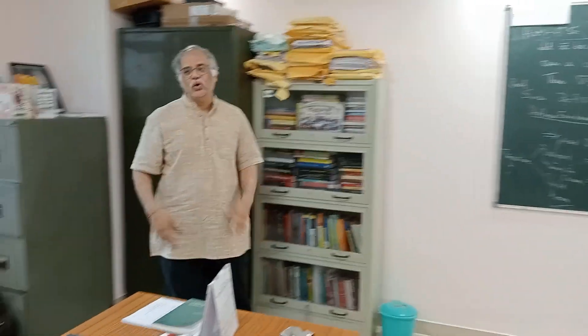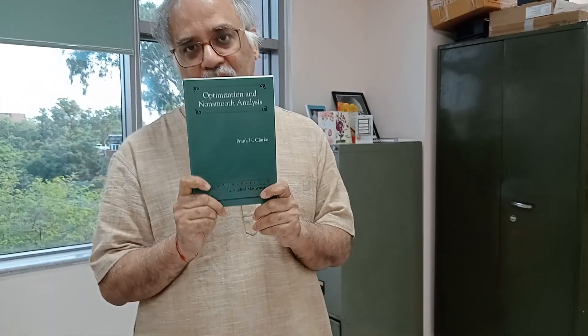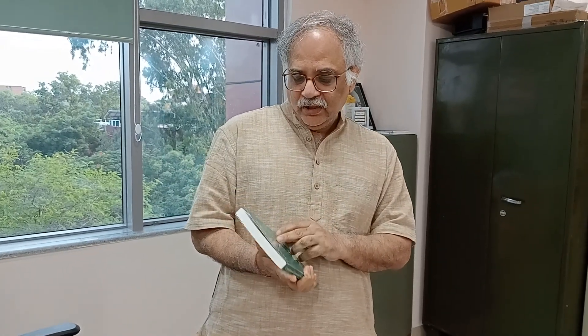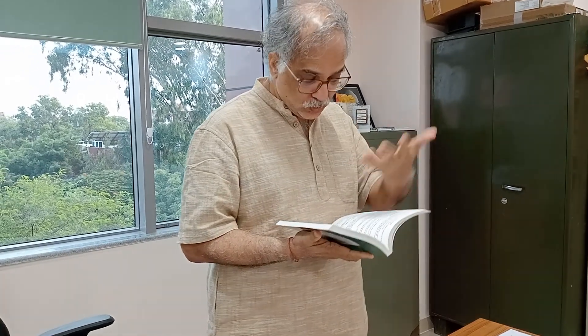The problem in mathematics is you cannot read all the books you have. Maybe my next program should be called 'Books: Read, Half-Read, and Unread.' Even with unread books, you see the preface, read some parts, but don't read everything. For example, one of the greatest books in optimization theory is 'Optimization and Nonsmooth Analysis' by Francis Clarke — his name here is Frank H. Clarke but he now calls himself Francis Clarke, having moved from Canada to France. As a student and researcher I used this book many times, reading only the parts I required.